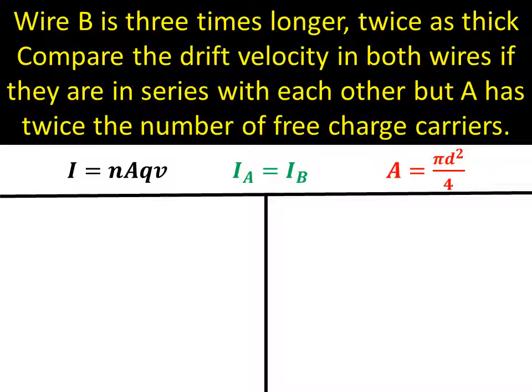Well, what else do we know? Well, we know they're in series with each other. So that tells us that the current in one must be the same as the current in the other. So that gives us this green formula, IA equals IB, which is really, really important.